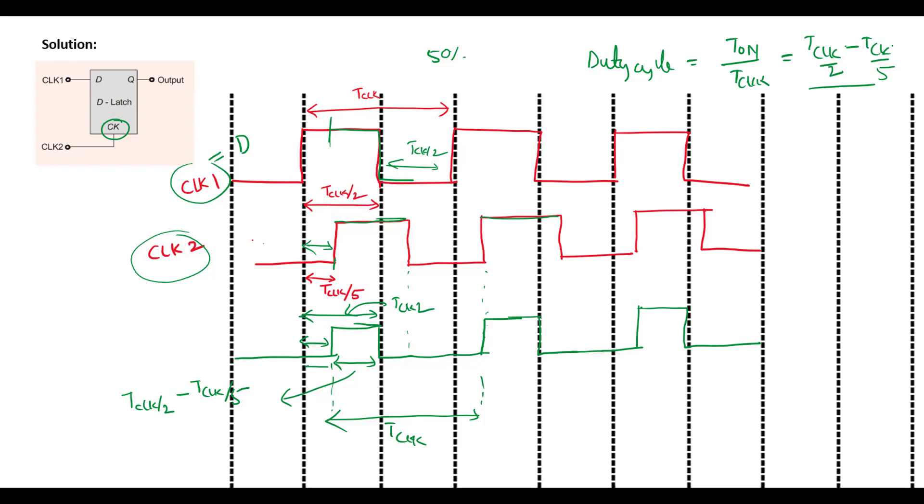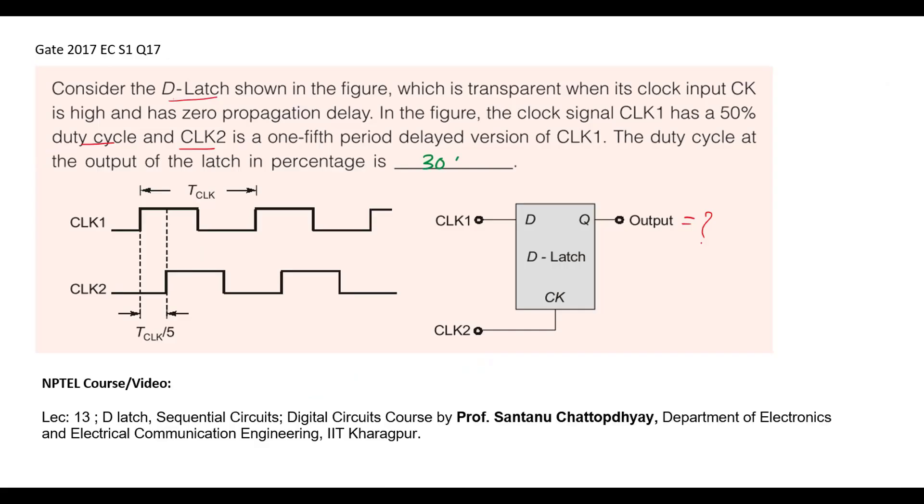If you simplify this, you will get 3 by 10 into 100 percent. So the duty cycle at the output is 30 percentage.